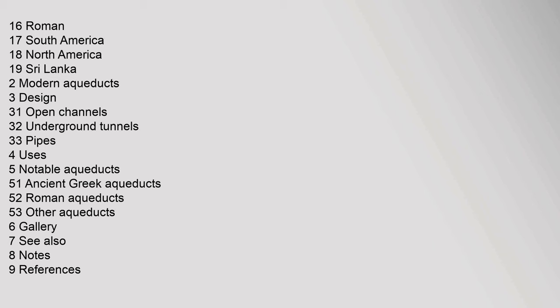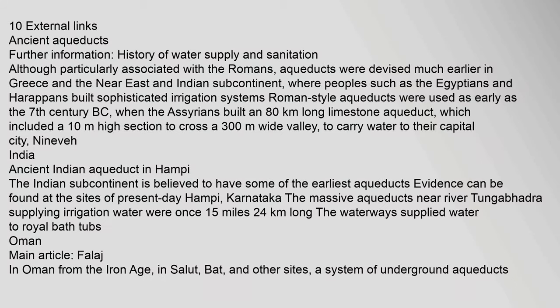Although particularly associated with the Romans, aqueducts were devised much earlier in Greece, the Near East, and the Indian subcontinent, where peoples such as the Egyptians and Harappans built sophisticated irrigation systems. Roman-style aqueducts were used as early as the 7th century BC, when the Assyrians built an 80-kilometer-long aqueduct.